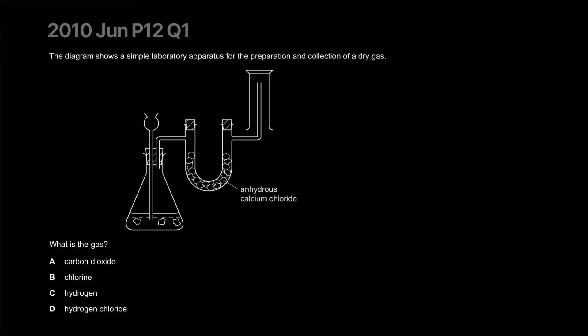The diagram shows a simple lab experiment to collect a gas. What is the gas? This is an inverted gas jar, so it's meant to collect gases which are less dense than air.